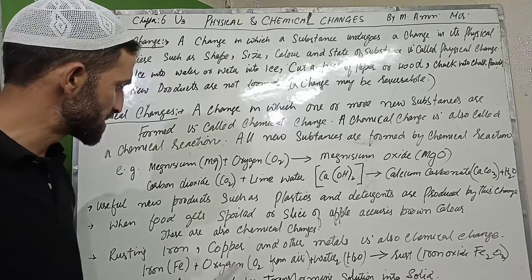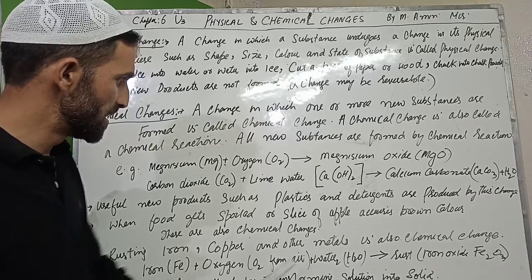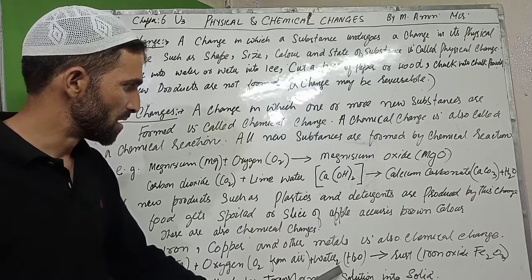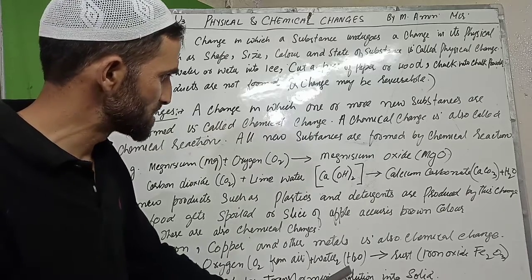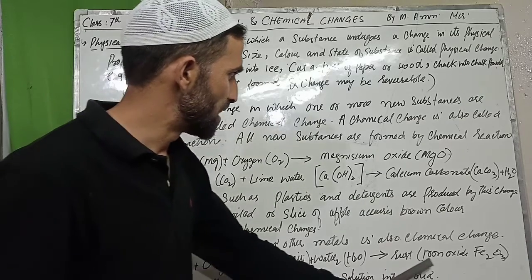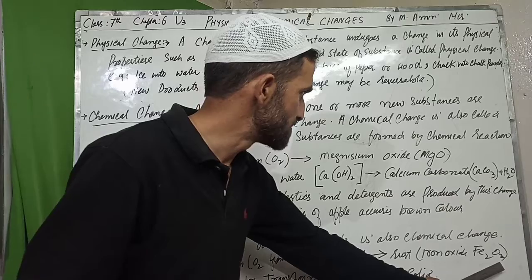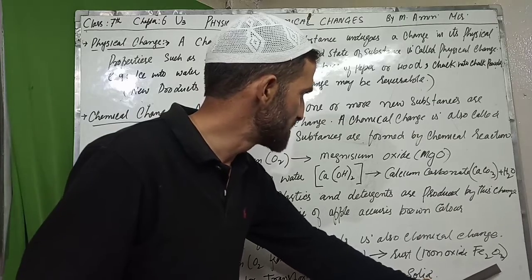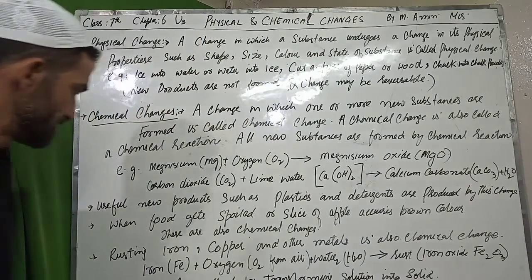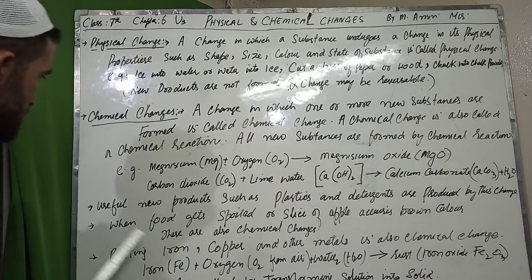Like water and iron forming rust — water and iron produce rust. This is Fe2O3, and this is an example of a chemical change.